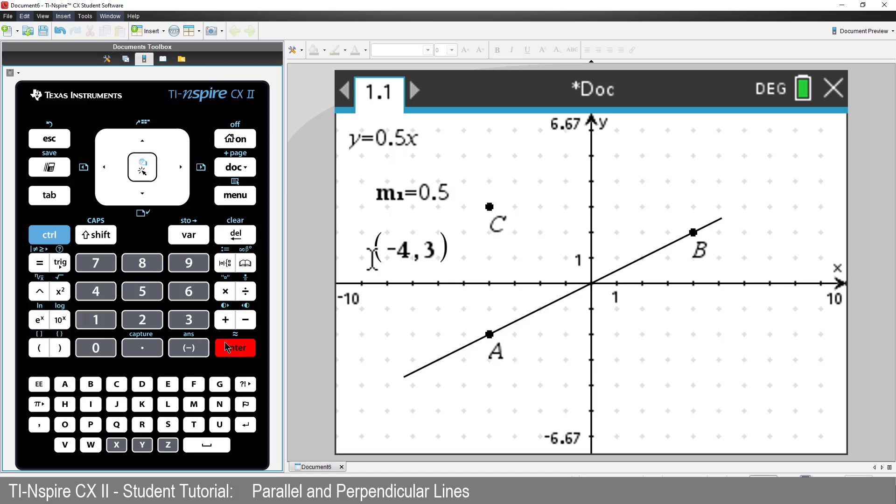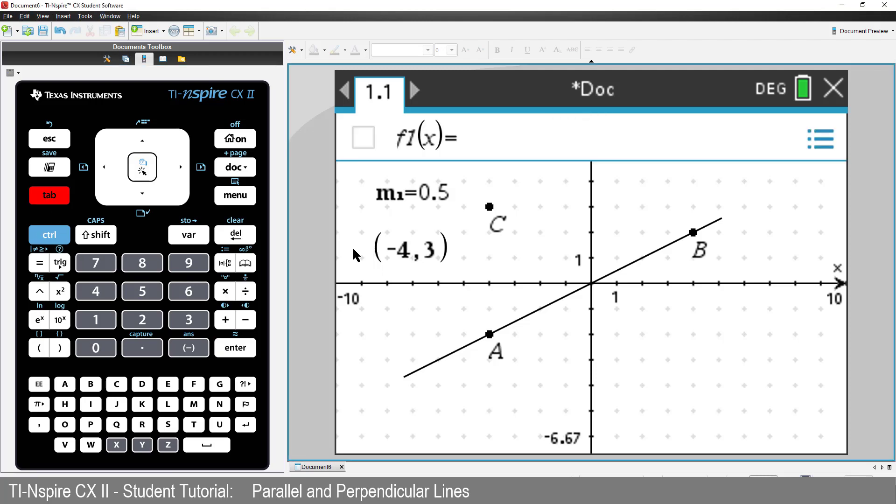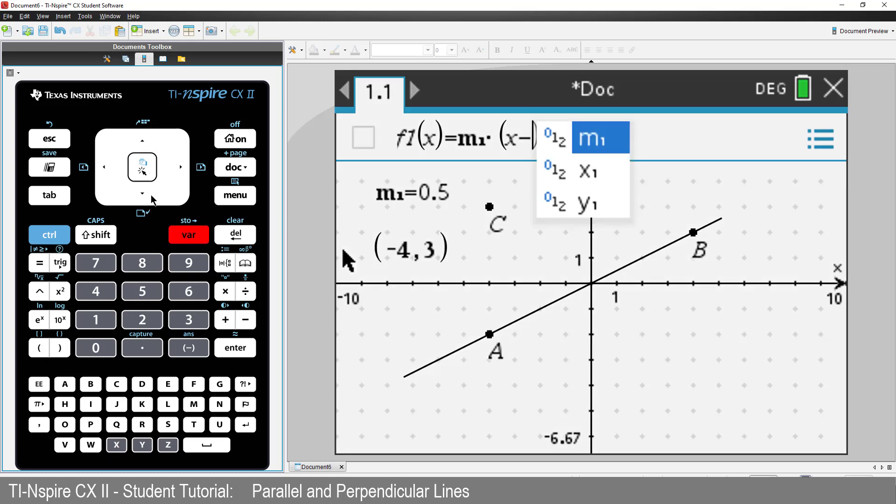Now suppose we want to define the equation to a line parallel to our original line, passing through point C. Press Tab and type in the equation M1 times X minus X1 plus Y1. This is a translational form of a straight line.